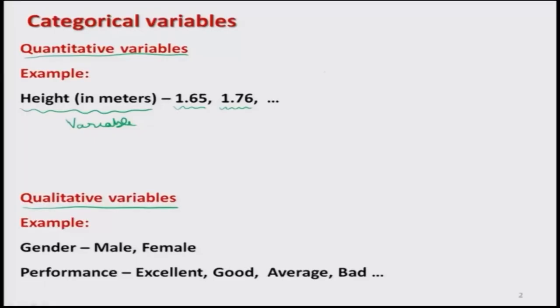For example, if there are two persons — height of one person is 1 meter and height of another is 2 meters — I can say the second person's height of 2 meters is twice the height of the first person whose height is 1 meter. I can find the total height: 1 plus 2 equals 3 meters. And if I want the average height, I divide 3 meters by 2 to get 1.5 meters. Such variables are called quantitative variables — I can obtain observations in some quantified way.